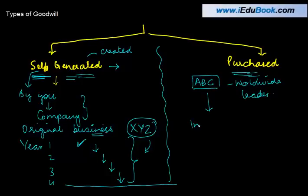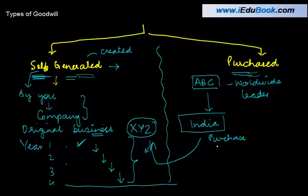ABC, let's say suppose come into India and what they do is that they decide that instead of starting from year one, two, three and four, let us purchase the business from XYZ. When they purchase the business from XYZ, they make a payment to XYZ for all the assets including goodwill.